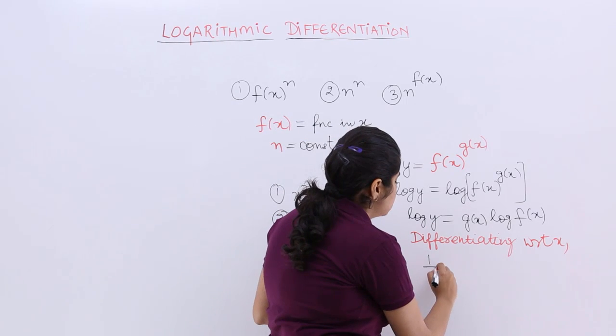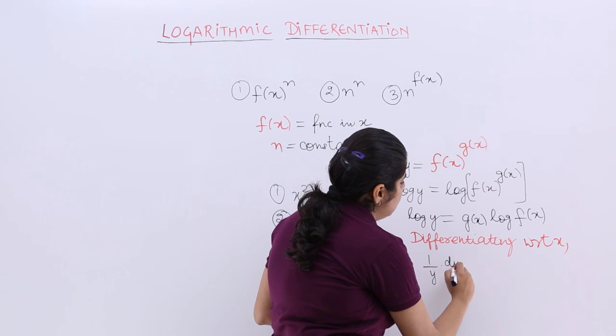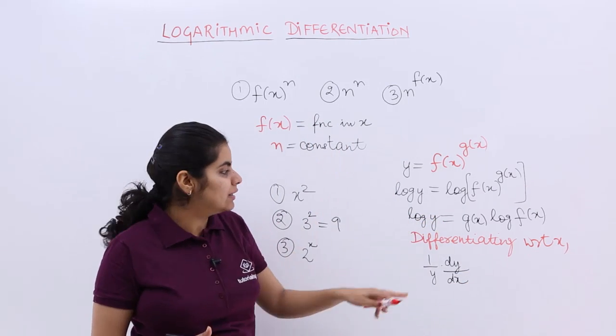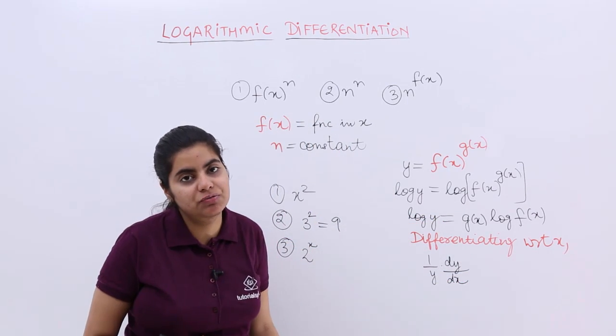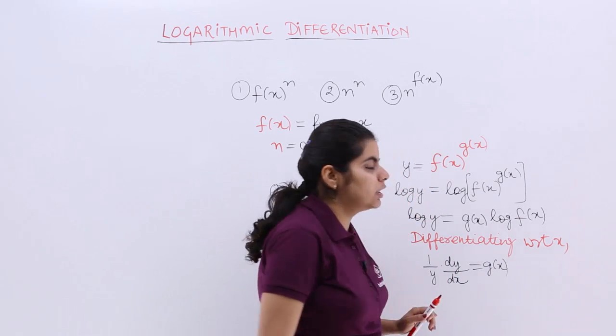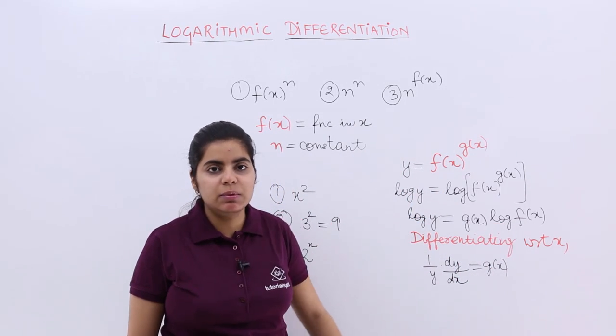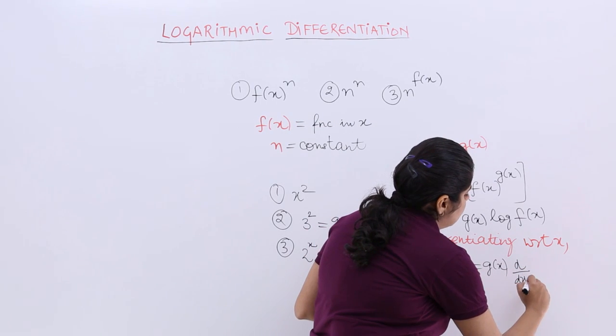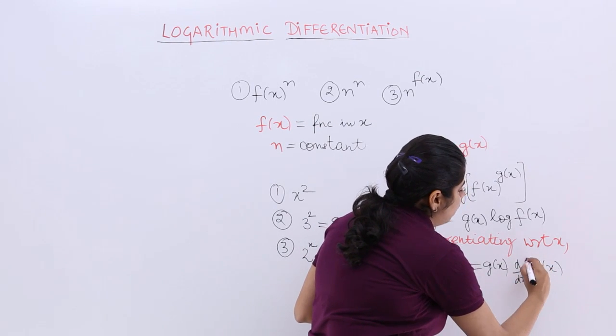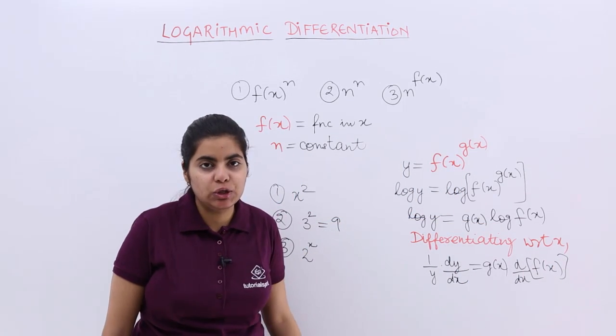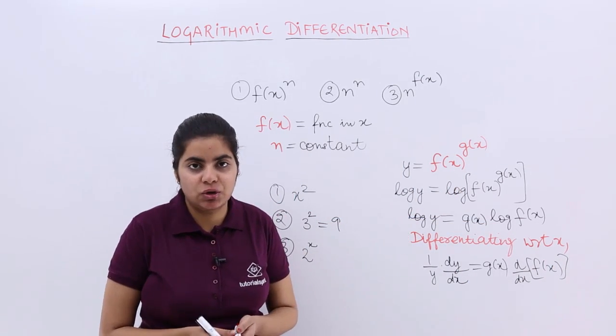How will it be? Log y differentiation is 1 upon y dy by dx because you know that log's differentiation is 1 upon that thing and y also has to be differentiated with respect to x. Then g(x) is already there. Keep it as it is. Log f(x) means you have to differentiate f(x) also. So it will become d by dx of f(x) and then it follows. It will depend how lengthy the question is depending upon what is the value of f(x) and you will solve it later on.